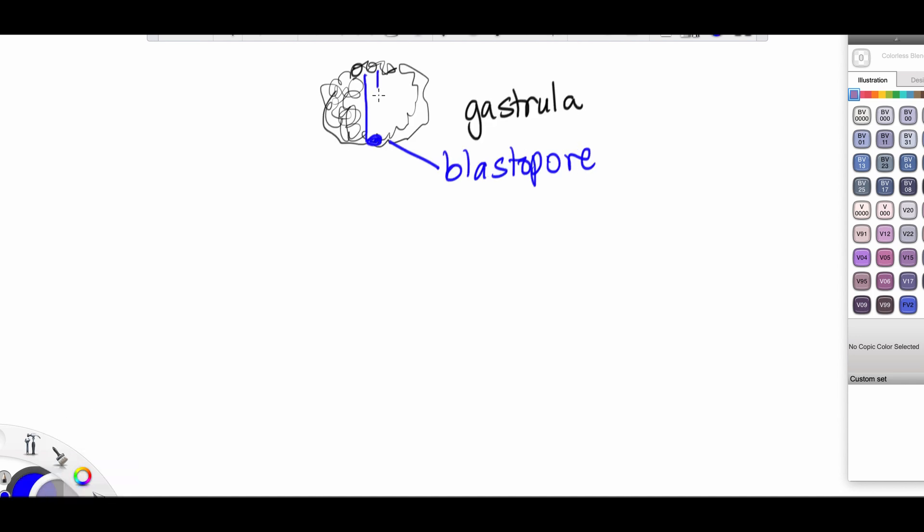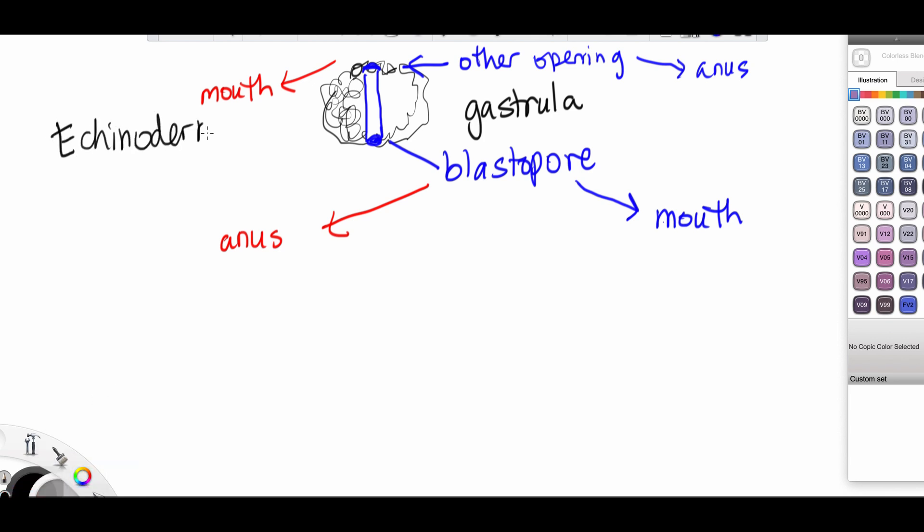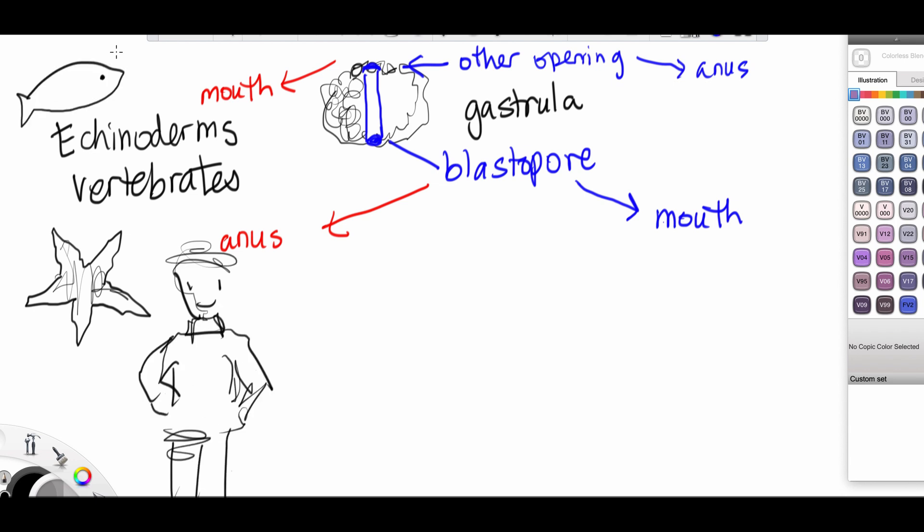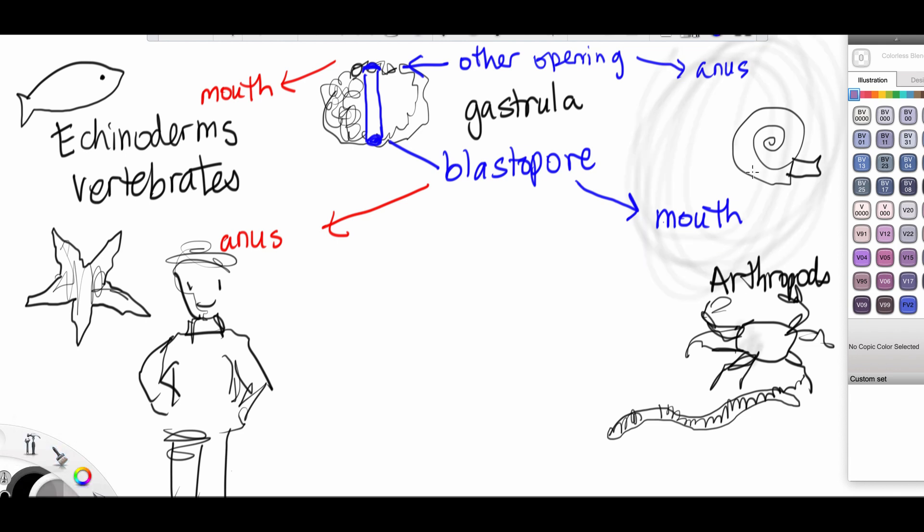So, you see, the gastrula makes a blastopore and the other opening. And the fate of the blastopore and the other opening really depends on what kind of animal we're talking about. In echinoderms and vertebrates, the blastopore becomes the anus. And in arthropods and mollusks and worms, the blastopore becomes the mouth.